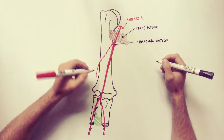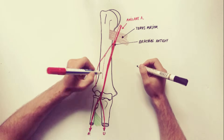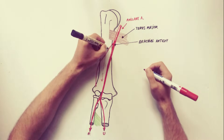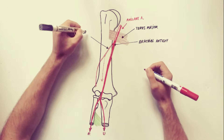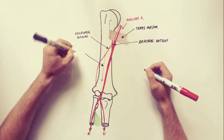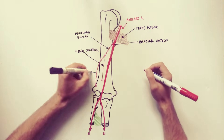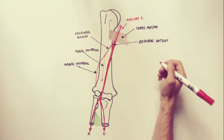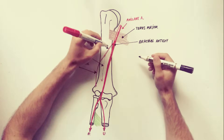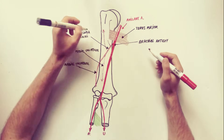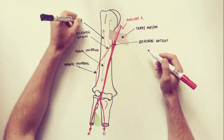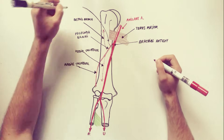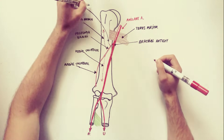The profunda brachii gives two terminal branches: the medial collateral artery, which descends posteriorly to the lower part of the humerus, and the radial collateral artery, which descends anterior to the lateral epicondyle. Before splitting into those two terminal branches, the profunda brachii also gives off a nutrient artery to the humerus and a deltoid branch.